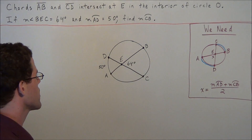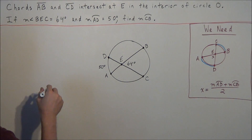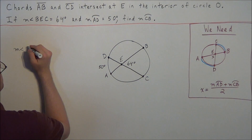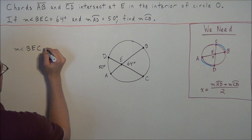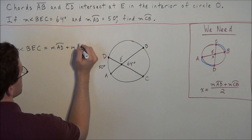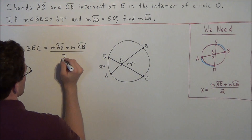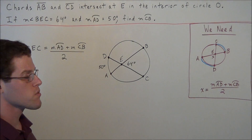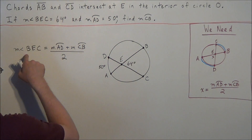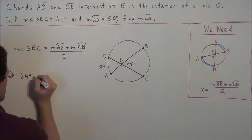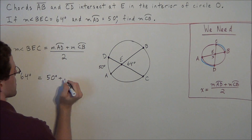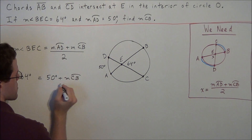So we can use this equation to find the measure of arc CB. We set up: the measure of angle BEC equals the measure of arc AD plus the measure of arc CB, divided by two. Now we substitute the given information — the measure of angle BEC is 64 degrees, and the measure of arc AD is 50 degrees. So we have 64 degrees equals 50 degrees plus the measure of arc CB, divided by two.